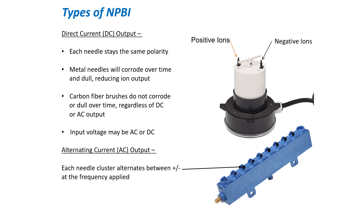There are two types of needle point bipolar ionization: direct current and alternating current. DC NPBI generally has two electrodes — one remains positive all the time, the other remains negative. If you're using metal electrodes with direct current, metal will start corroding over time and the needle tips will become dull. We learned that with our first product, the GPS RN. We used stainless steel needles for the first six months and found the needles would wear down even being stainless steel, so we switched all products to carbon fiber brushes. When I say direct current, that refers to the output only — the input may be AC at 110V, 24V, or 208–240V AC, or it could be DC input as well.